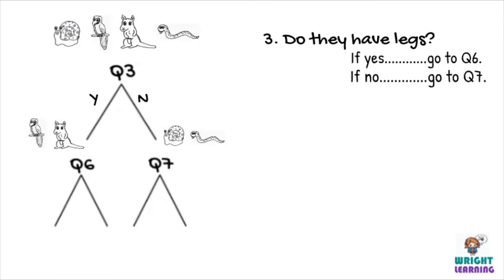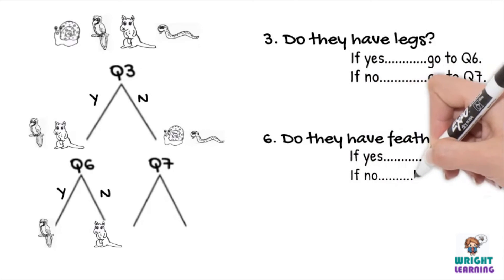We want our sixth question to highlight a difference between a macaw and a kangaroo. So we could ask something like, do they have feathers? What does this mean we write under question 6 in our written dichotomous key then? You've probably got the hang of it now, and know that we would write, if yes, macaw, if no, kangaroo.